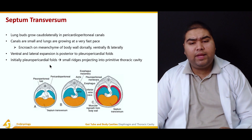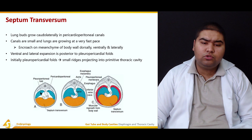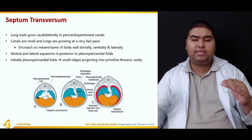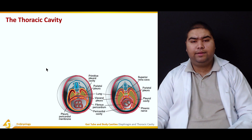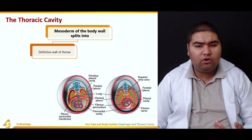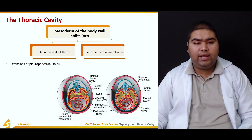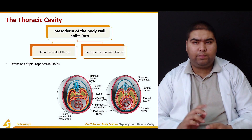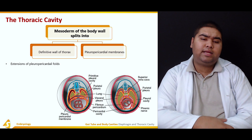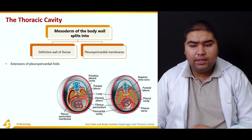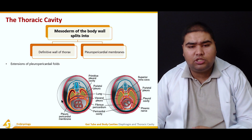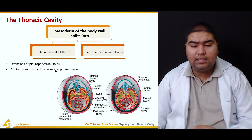Initially, the pleuro-pericardial folds appear as small ridges projecting into the thoracic cavity. These are the pleuro-pericardial folds projecting into the primitive thoracic cavity. The mesoderm of the body splits into the definitive wall of the thorax and the pleuro-pericardial membranes. The pleuro-pericardial membranes are actually the extensions of the pleuro-pericardial folds. They contain cardinal veins and phrenic veins.